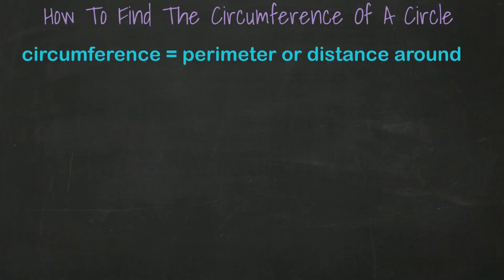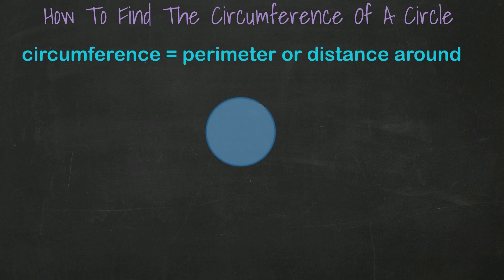The circumference of a circle is the distance around the perimeter. Think about it this way. If you were to cut the circle at any point and pull it apart into a straight line, that distance would be the circumference.